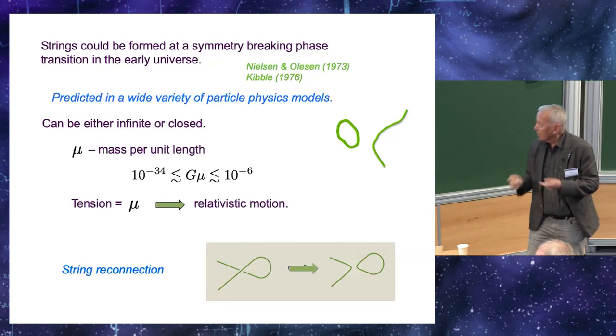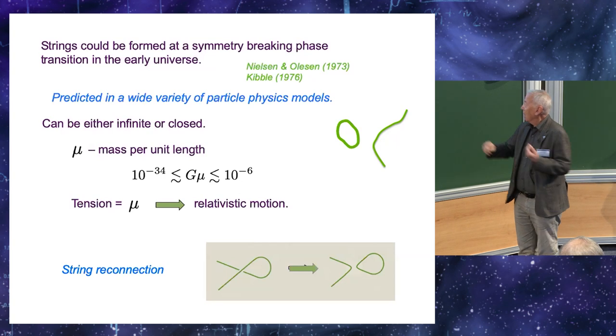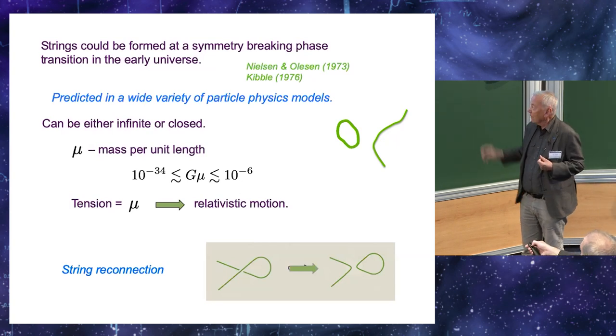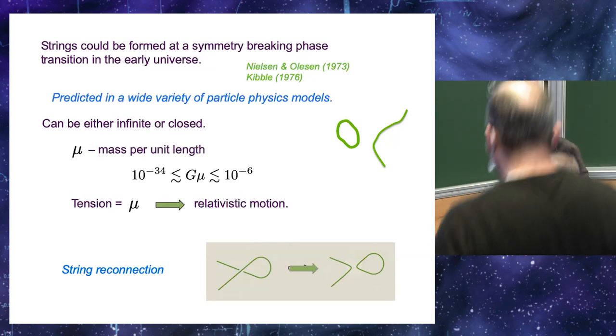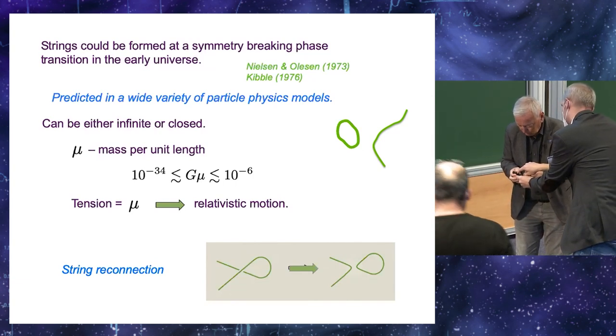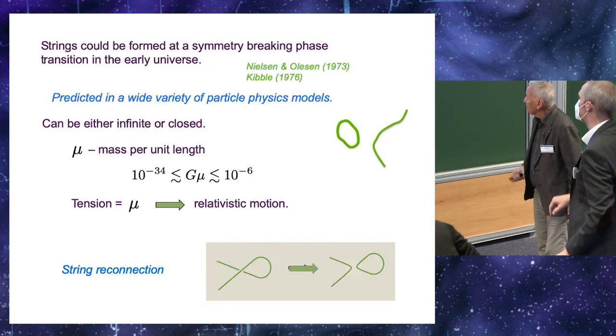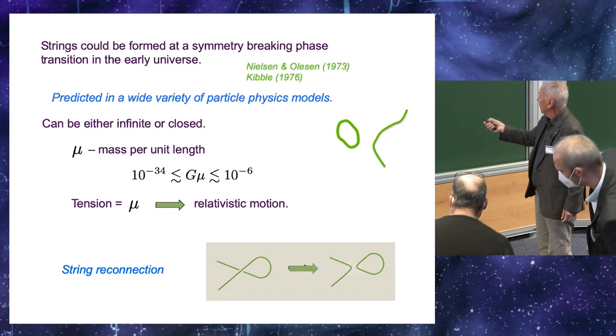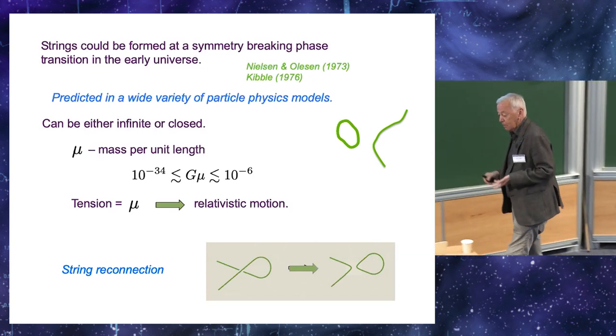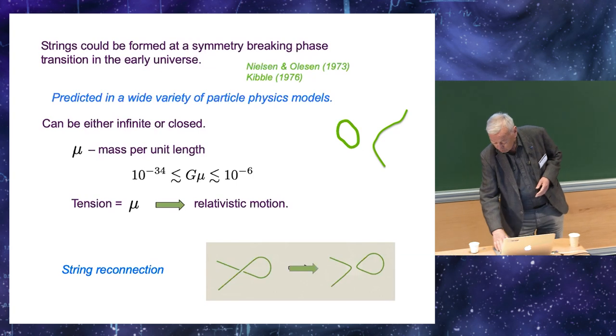When two strings cross, they reconnect as shown here. So when they cross, they reconnect at the crossing point, and this provides a mechanism for the formation of closed loops.